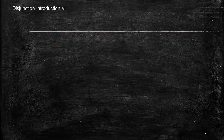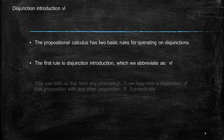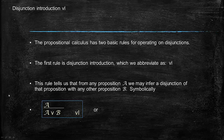So the first rule, disjunction introduction, is fairly straightforward. What it tells us is that from any proposition A, we can infer a disjunction of that proposition with any other proposition B. So symbolically, we can go from A to A or B — we can infer A or B from A — or also we can infer the logically equivalent expression B or A. So from A we can infer A or B, and from A we can infer B or A.